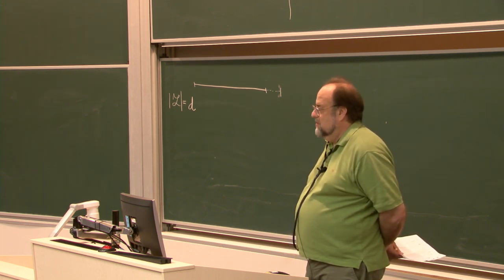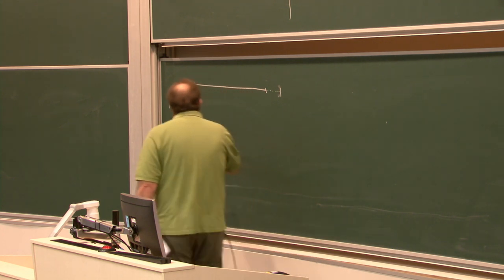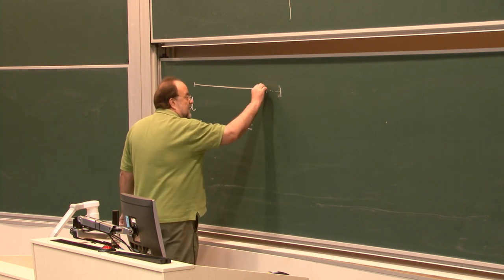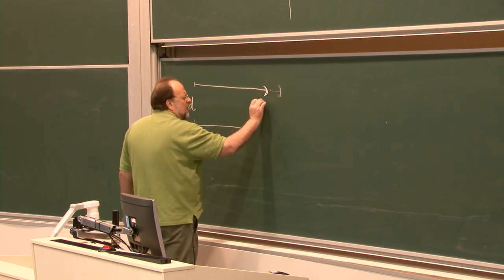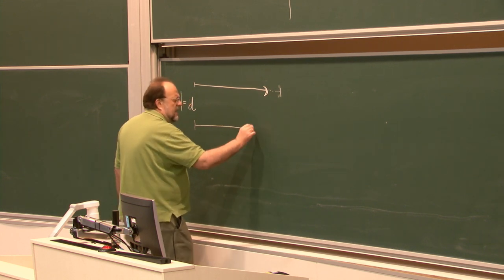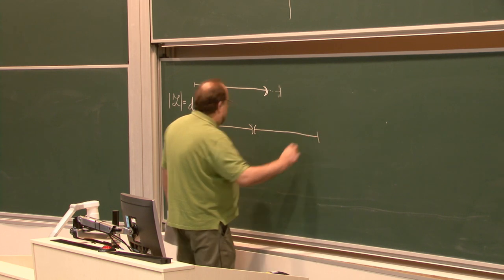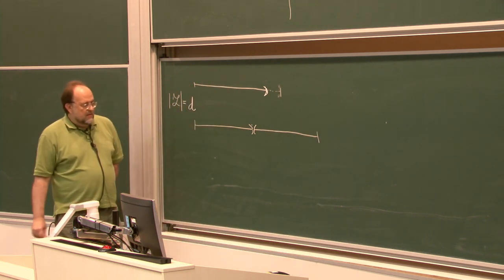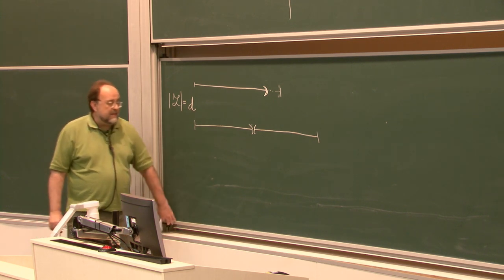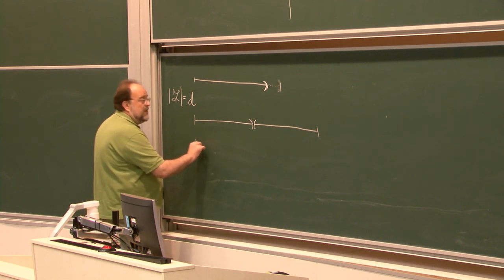A trivial way is to just add a reverse copy of the string — you mirror image it at the end. But this might be unnecessarily long, so if there is something shorter, we should find it.